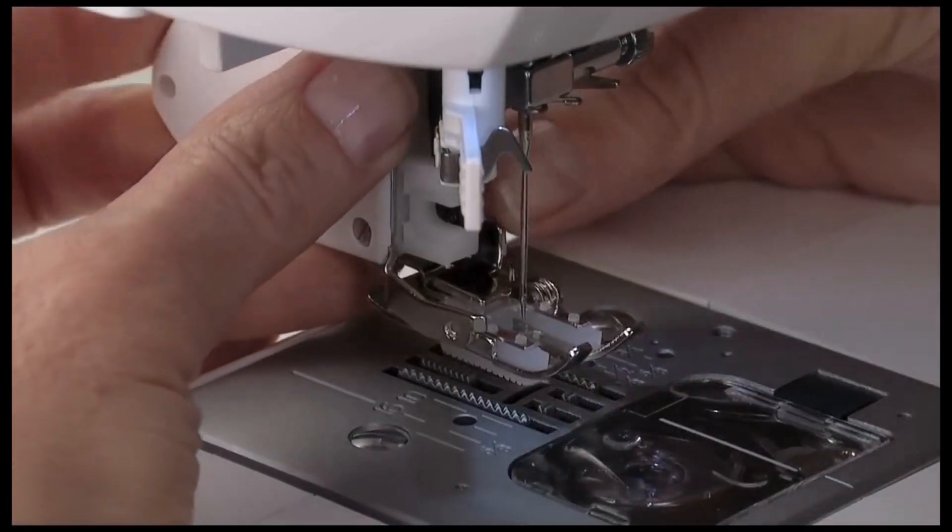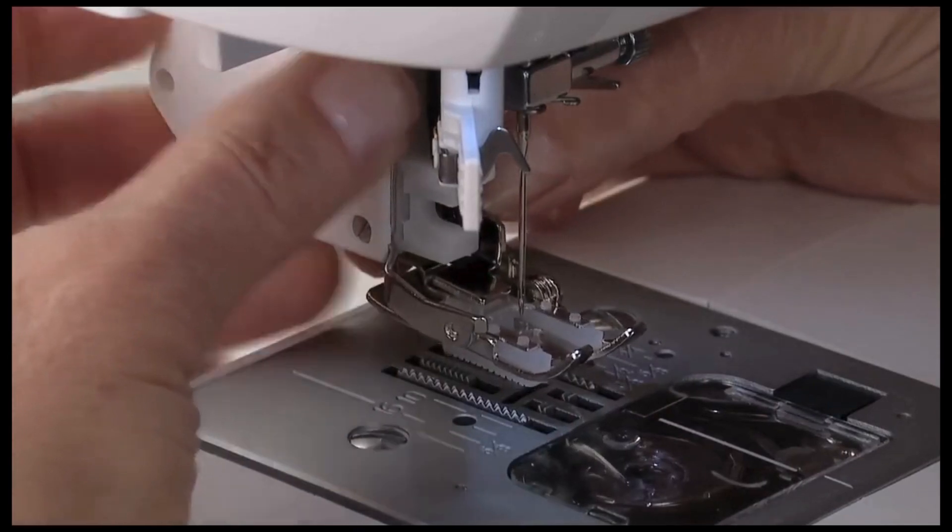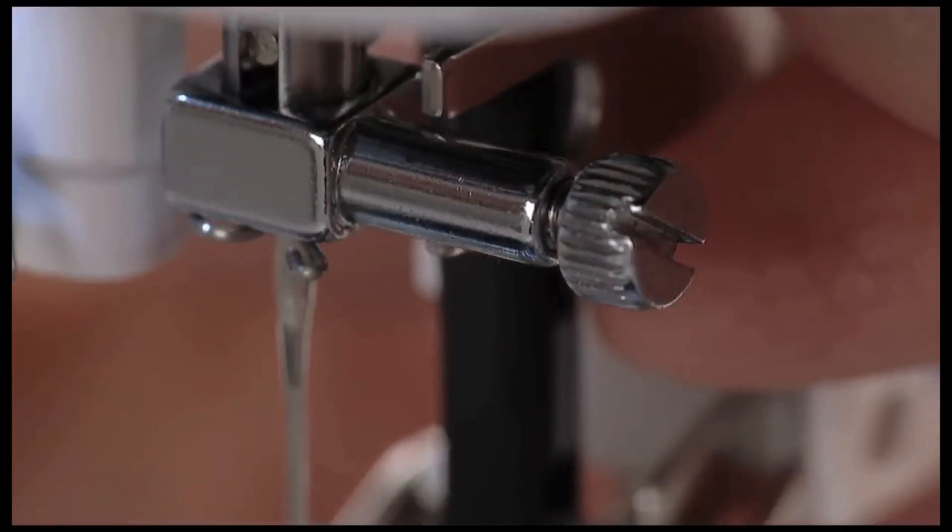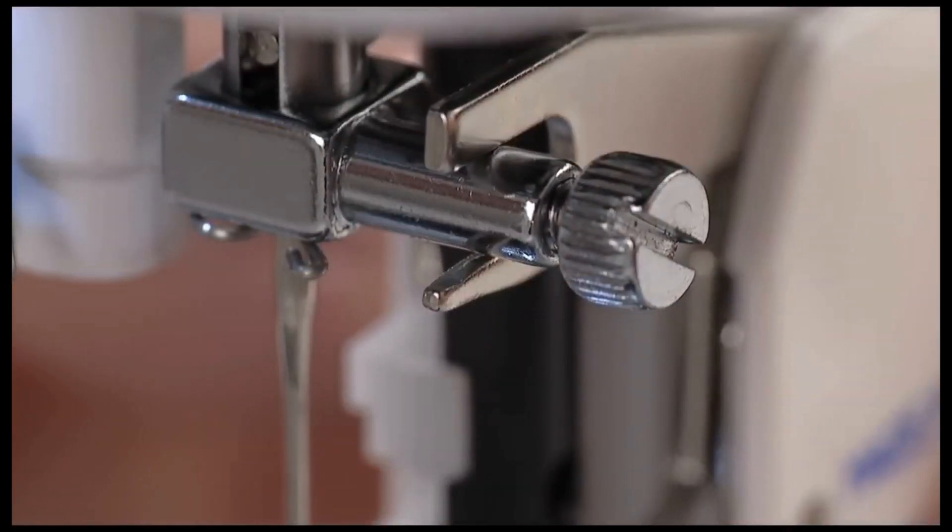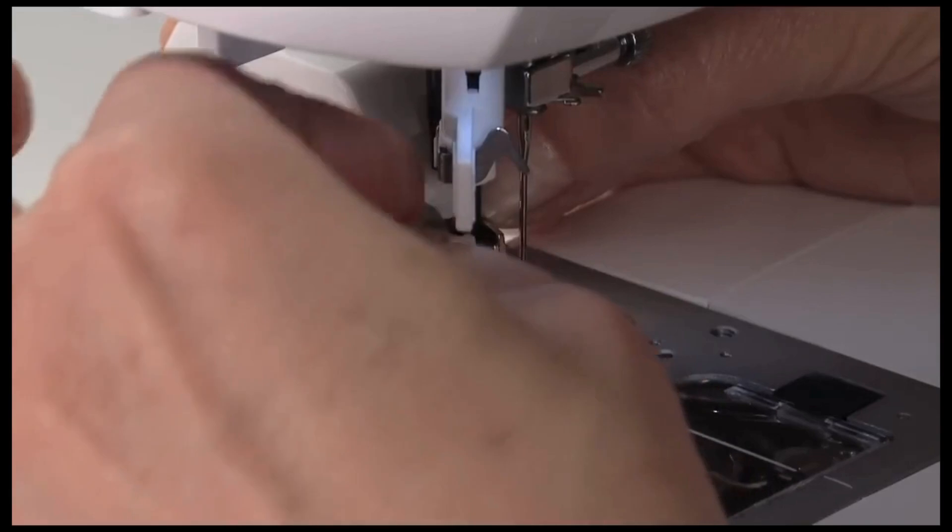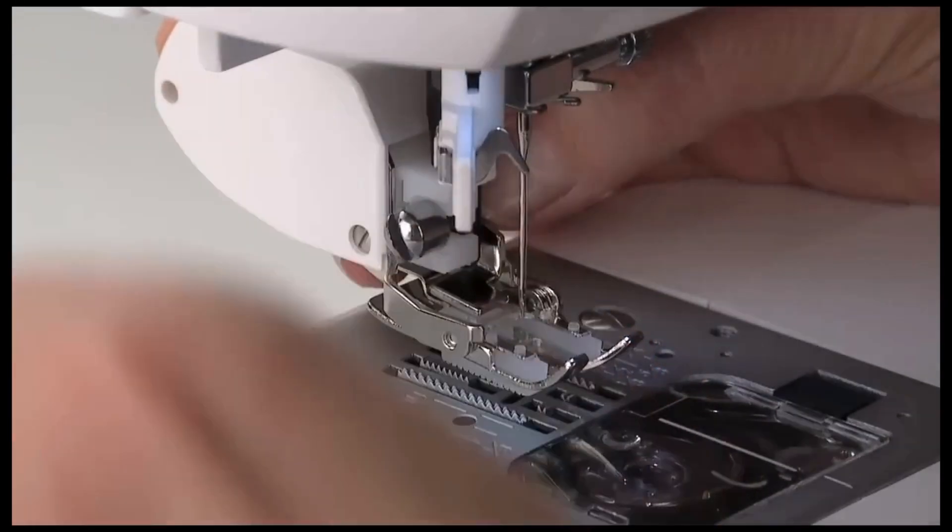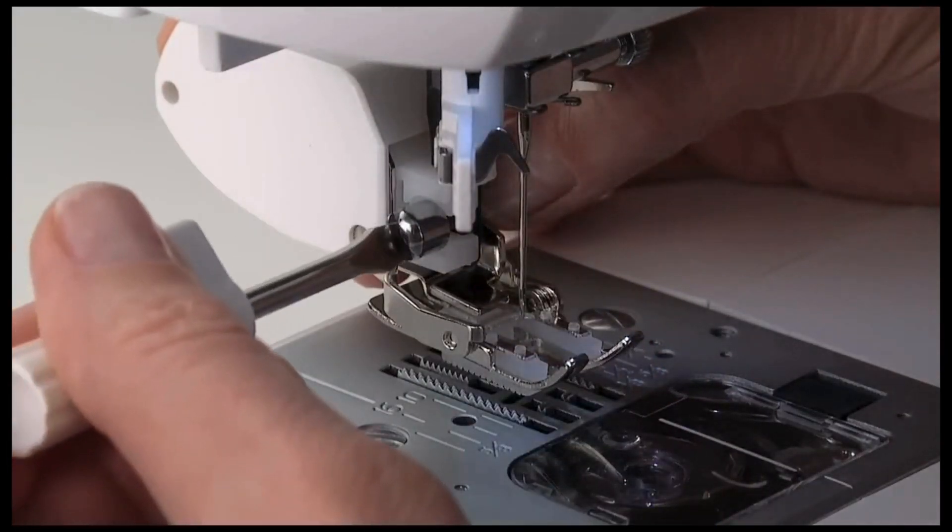Place the Even Feed Foot onto the Presser Foot Holder, making sure its extension arm fits on the needle clamp. Replace the Presser Bar Screw. Be sure the foot is correctly seated on the Presser Bar, then secure it in place.